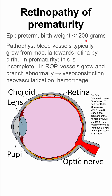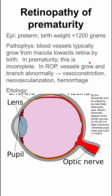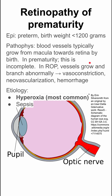The pathophysiology: blood vessels typically grow from the macula toward the retina by birth. In prematurity, this is incomplete. So in retinopathy of prematurity, these vessels grow and branch abnormally. This can lead to vasoconstriction, neovascularization, and hemorrhage — all problems with vessel growth. The etiology is usually hyperoxia.